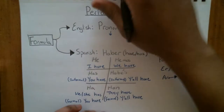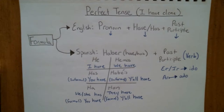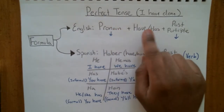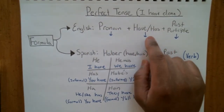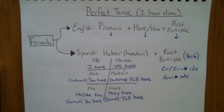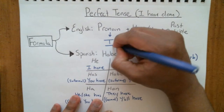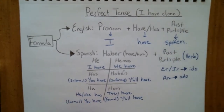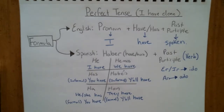The perfect tense expresses 'I have done something' — like 'I have eaten,' 'I have spoken,' or 'she has not said anything.' In English, you take your pronoun — I, you, he, she, we — put have or has, then your past participle. For example: I have spoken. That is a perfect tense thought. In Spanish, it's actually a little simpler because your verb for have or has conjugates based on your pronoun.